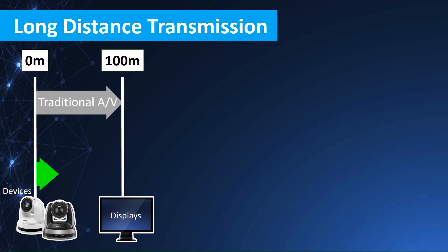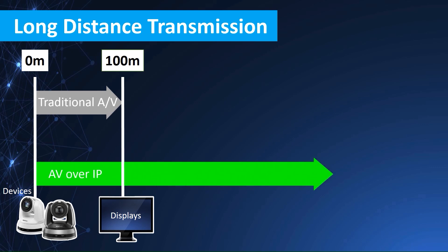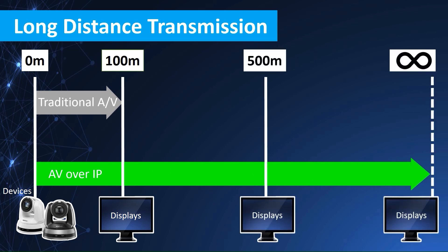Traditional installations require dedicated AV cables which are limited by transmission distance. AV over IP can send signals over long distances using standard network data cables.